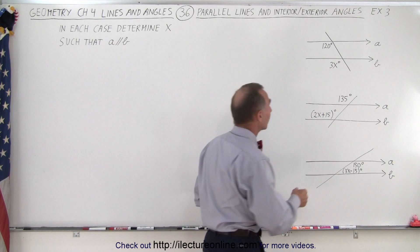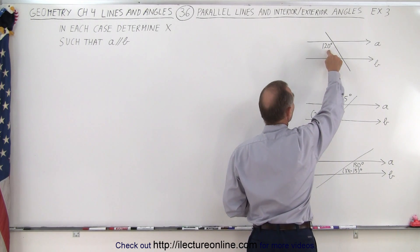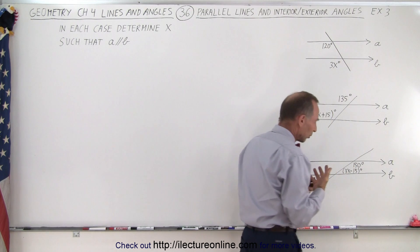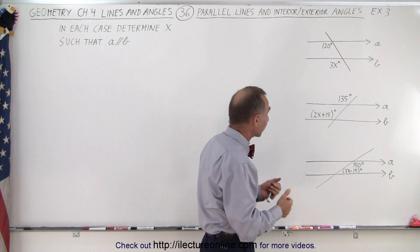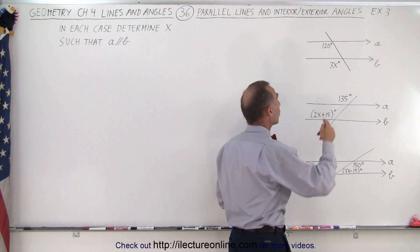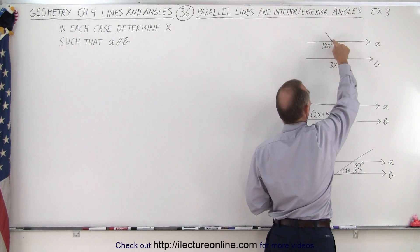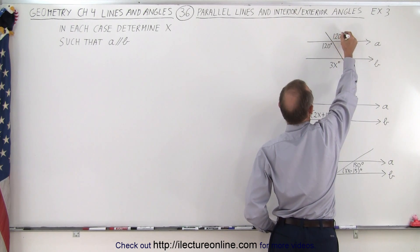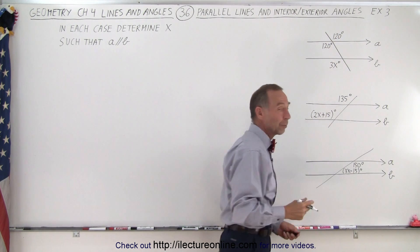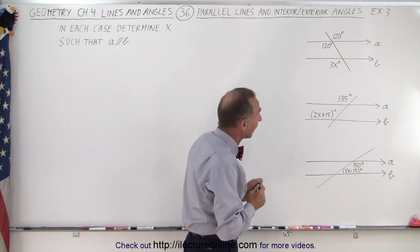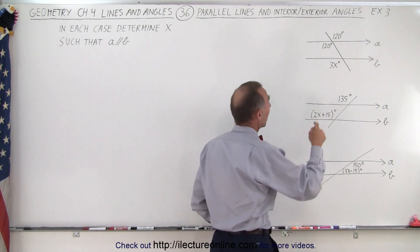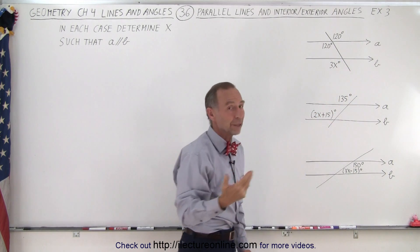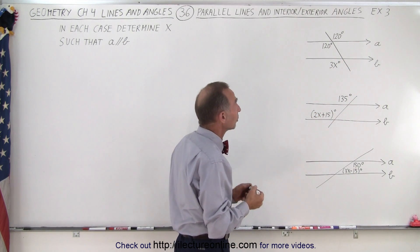So here we can see that we have the angle of 120 degrees and the angle of 3x degrees. What we're looking for is corresponding interior or corresponding exterior angles. I also know that what we call opposite or vertical angles are equal to each other, which means that this angle must be 120 degrees as well because those two angles are vertical angles. That means that now we have two corresponding exterior angles, and we know that if a and b are parallel, those two must be equal to each other.